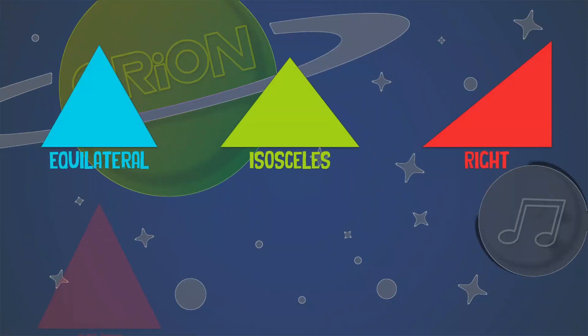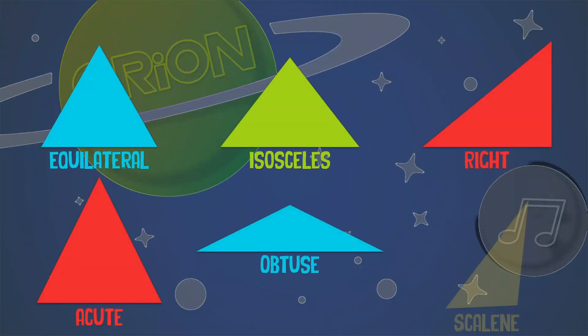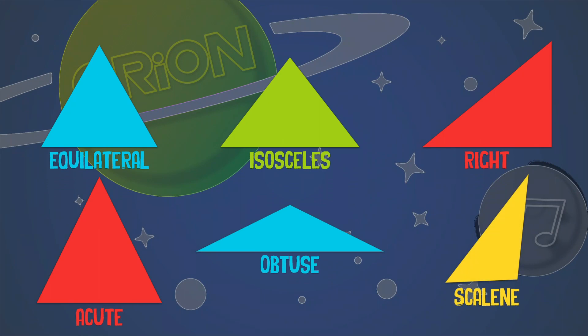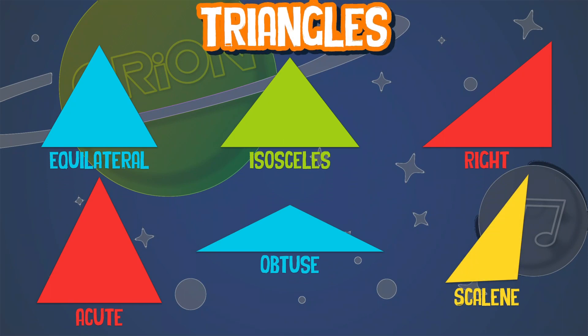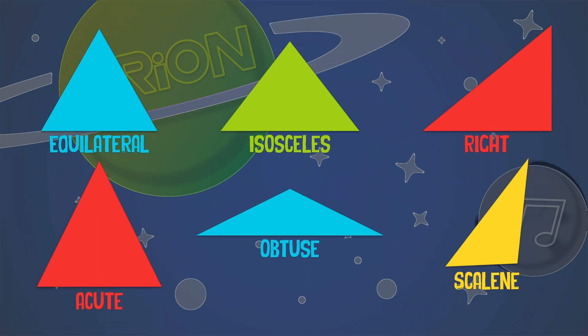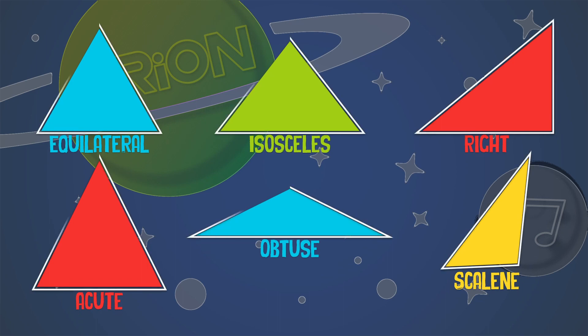Equilateral, isosceles, right, acute, obtuse, and scalene are all types of triangles, but what do they mean? These six classes of triangles are grouped by their type of angle.